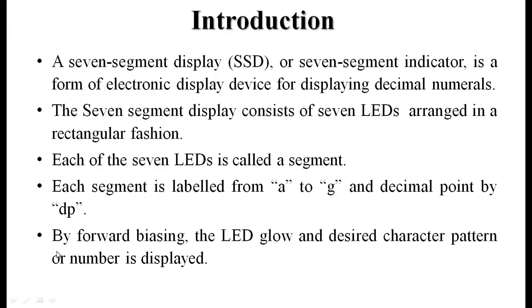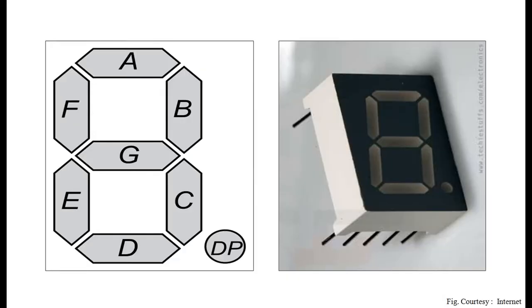A seven segment display is a device for displaying decimal numerals. It consists of seven LEDs arranged in a rectangular fashion. Each of the seven LEDs is called a segment. By forward biasing the LEDs, they glow and the desired character pattern or number is displayed.